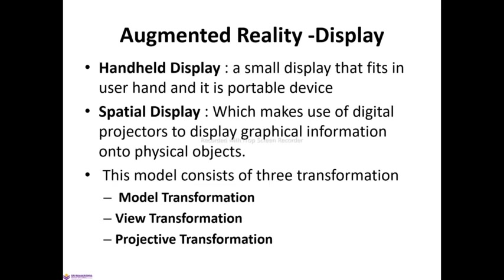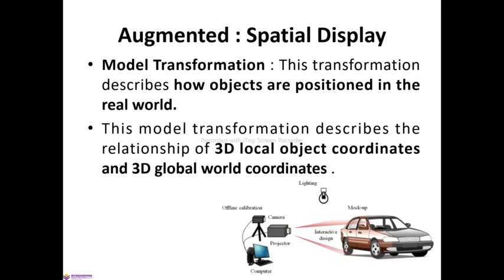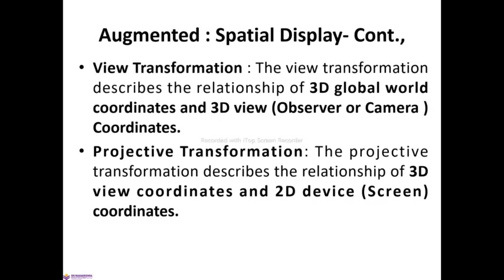The spatial display model consists of three transformations for doing this process. The types of transformations are: model transformation, view transformation, and projective transformation. Model transformation describes how objects are positioned in the real world and the relationship between 3D local object coordinates and 3D global world coordinates. The view transformation describes the relationship between 3D global world coordinates and 3D view coordinates, which represent the observer or camera position. The projective transformation describes the relationship between 3D view coordinates and 2D device coordinates.